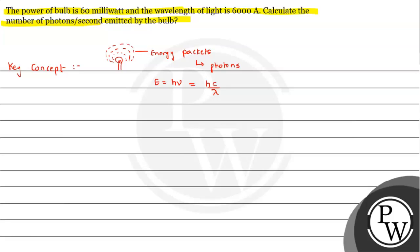So this is the situation. Let's say the power of the bulb is P watts. The total power comprises n number of photons, each having energy E. So total power P = n × E.